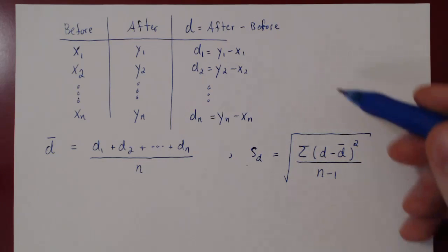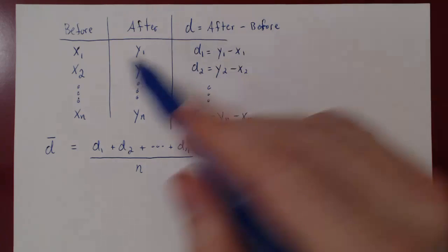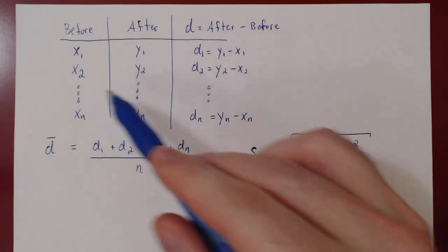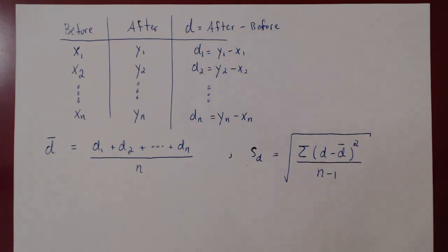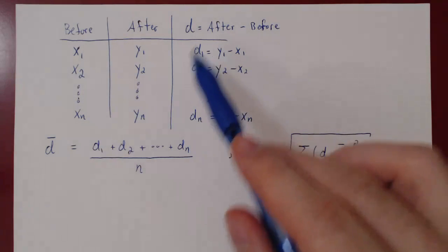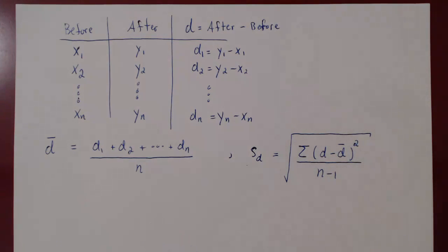The question is now, what is our test statistic? Well, there are two possibilities. If we have a normal distribution for the scores, any sample size will do. If, on the other hand, we don't know that we have a normal distribution, we will need a sample size of at least 30, so we can quote the central limit theorem.